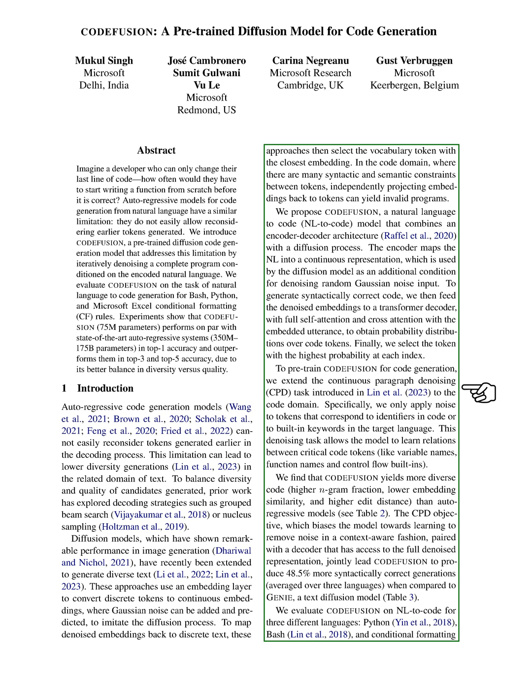We then select the token with the highest probability at each index. To prepare our system for code generation, we extend the continuous paragraph denoising (CPD) task to the code domain.